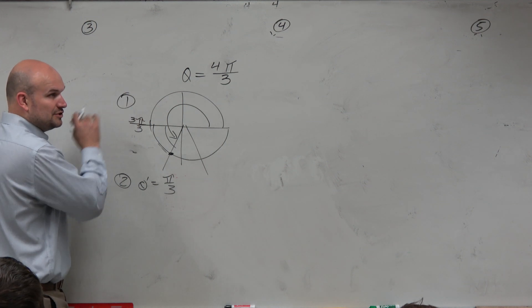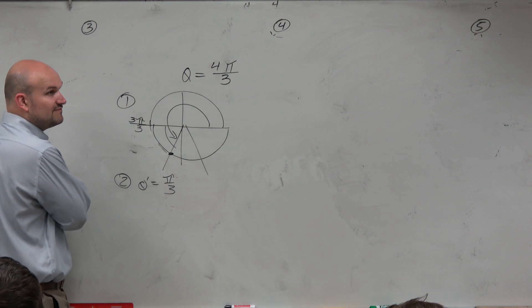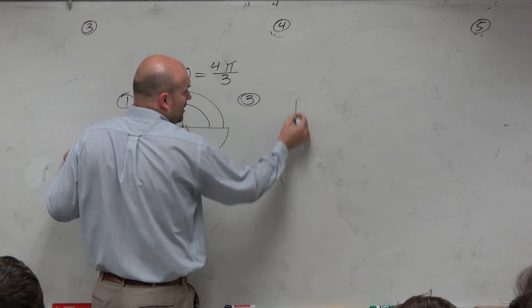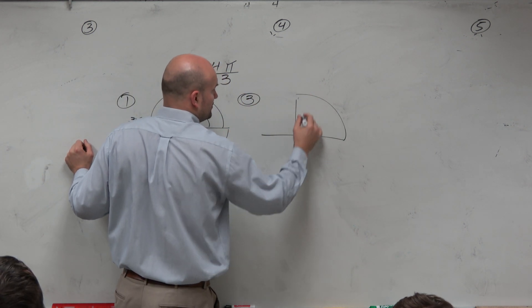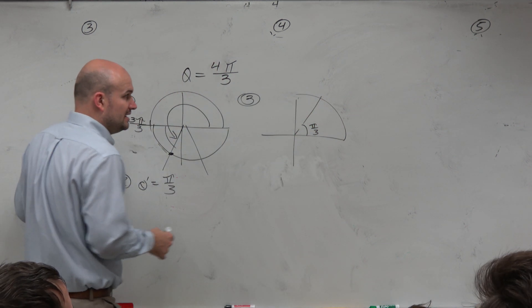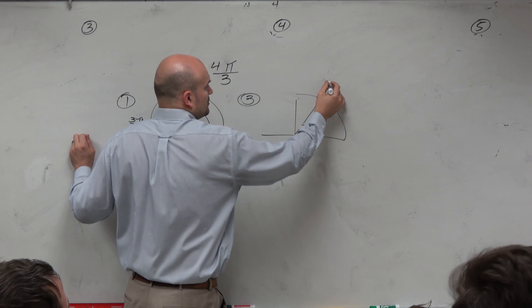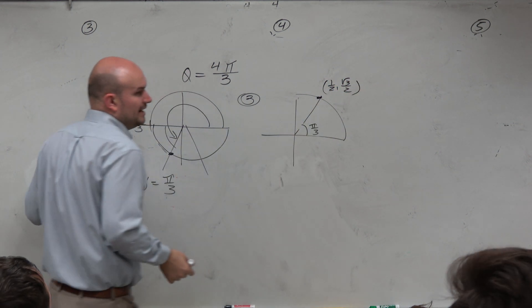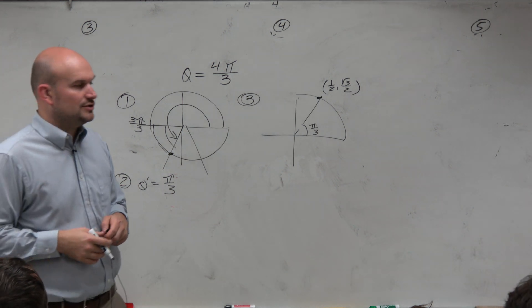Then the next step is to find the point on the unit circle. So we go to our unit circle, our first quadrant, which we need to know. And we know that the point on the unit circle that intersects the angle π over 3 is 1/2 comma √3 over 2. We just need to know that. There's not really much we can do to get around that.